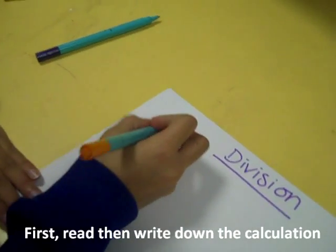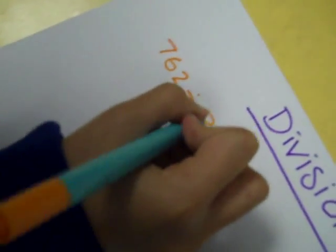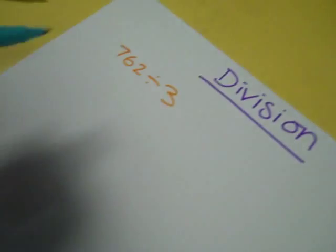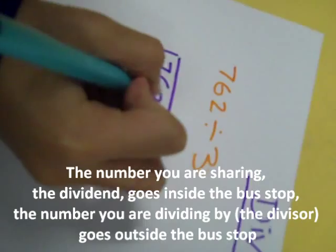You write the sum 762 divided by 3. Second, you write the bus stop method. The bigger number, which is 762, goes inside the box and the smaller number, which is 3, goes on the side.